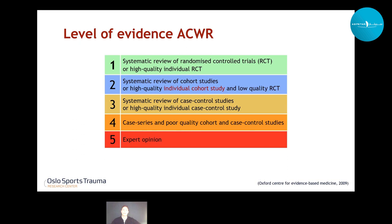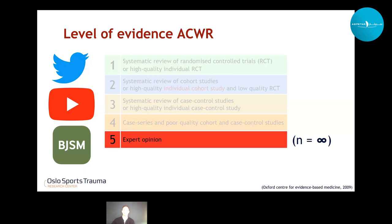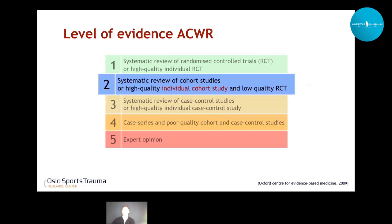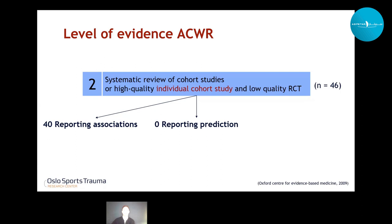When reviewing the evidence on ACWR, we need to use the evidence pyramid. A lot of the studies have been within the lowest bracket — expert opinions — such as posts on social media like Twitter or YouTube, but also editorials and discussion pieces in peer-reviewed literature. Besides these, there are many level-two evidence cohort studies. Reviewing 46 studies, 40 of them reported positive associations between acute-chronic workload ratio and injuries. None were able to predict injuries based on ACWR, and all 46 had methodological weaknesses in some way.